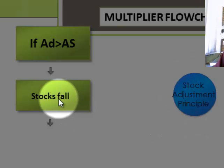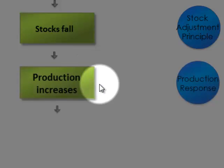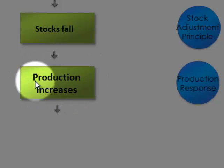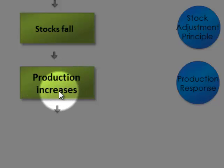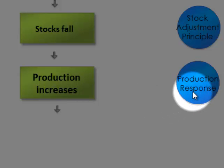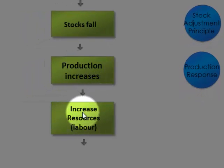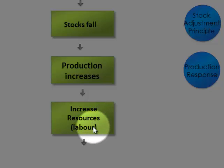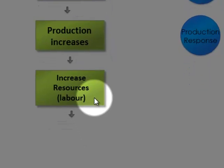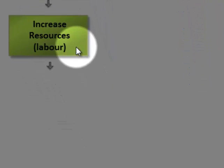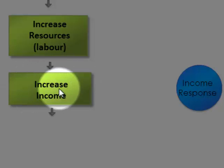So retailers are saying, look, I need more stock because my stocks are falling — I want to meet the demand of my customers. Eventually that gives a message to the production suppliers to increase their level of production, and that's what we call the production response. For that they need extra resources — land resources, capital resources, and also they need extra labour resources, and that's the important part here. So if I'm going to employ extra labour, if people are getting extra hours or people are getting new jobs, they're going to get extra incomes, and that's what we call the income response.